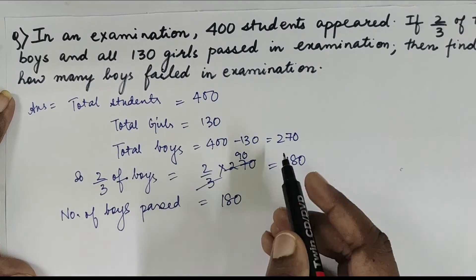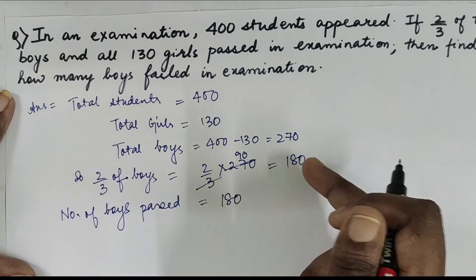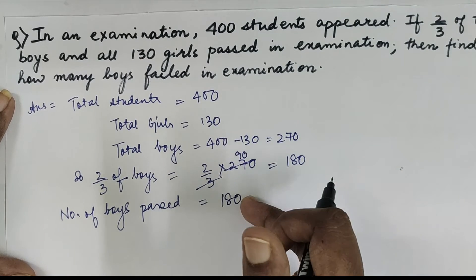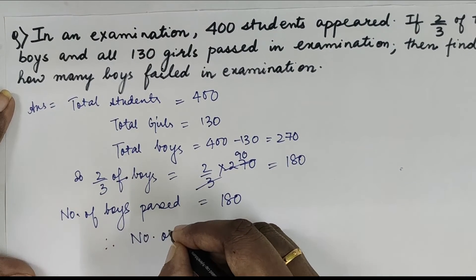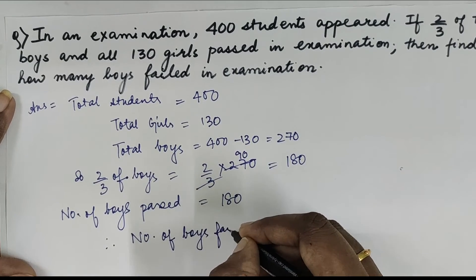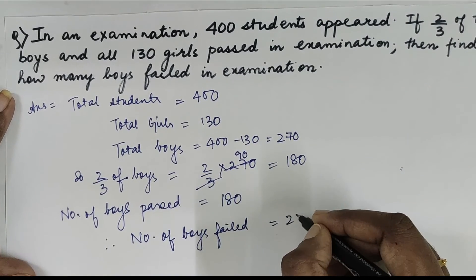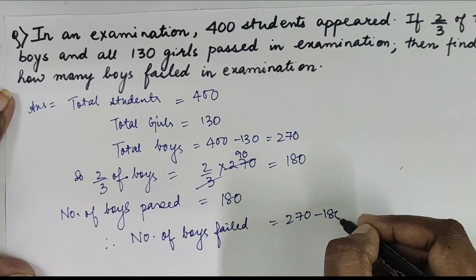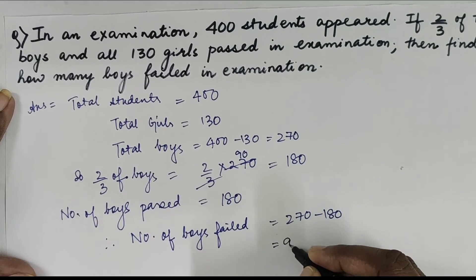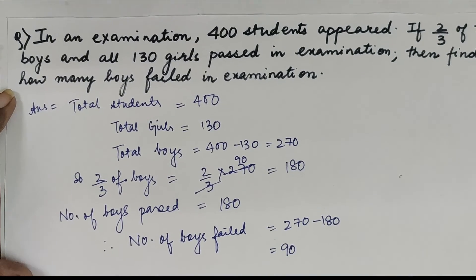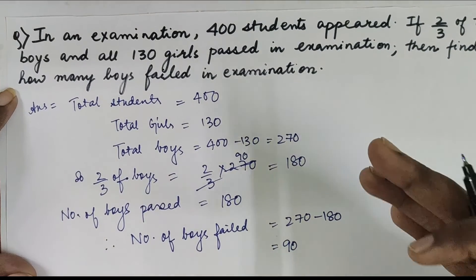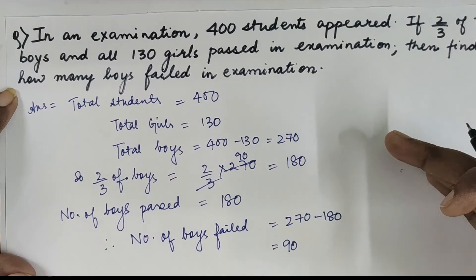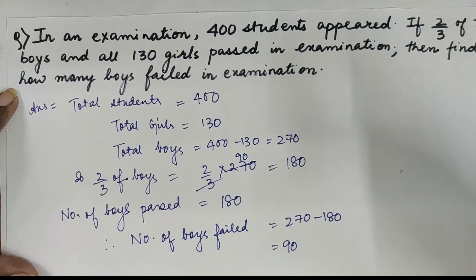Our question says to find out how many boys failed in the examination. You know that total boys were 270 and 180 have passed. Therefore, number of boys failed = 270 - 180 = 90. So if you read the question like this and try to understand, you have to do addition, subtraction, multiplication, and division. You can easily be able to solve the word problems based on rational numbers.